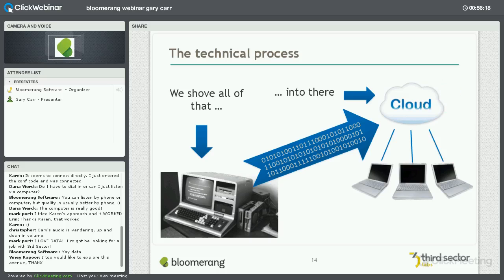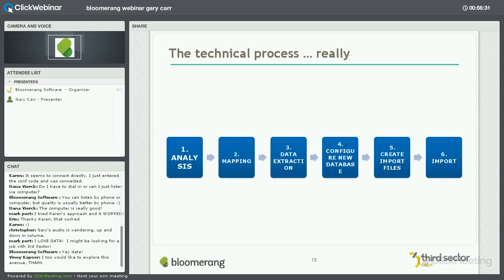We're shoving it into a cloud because so many of the new systems are software as a service — cloud-based, access anywhere. Just get all those zeros and ones out of the old, cram them into the new and we're good to go, right? The technical process really looks more like this — six steps that we have to get through. Those six steps are standard for any data migration: analysis up front, mappings across systems, data extraction from the legacy system, configuration of the new database, creating import files, and running your import.